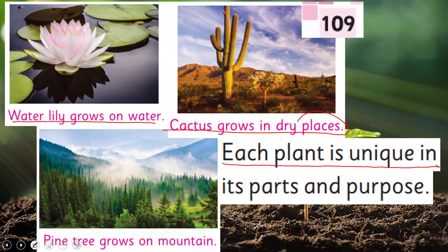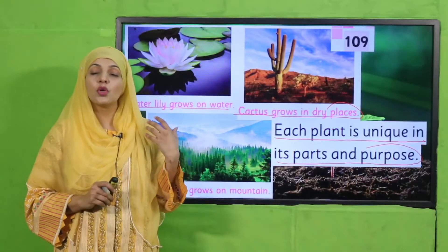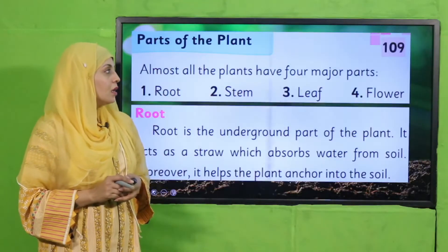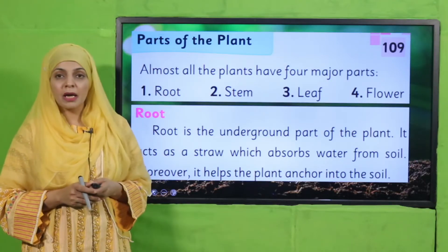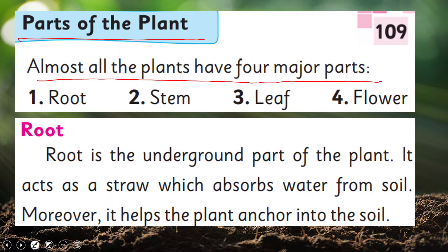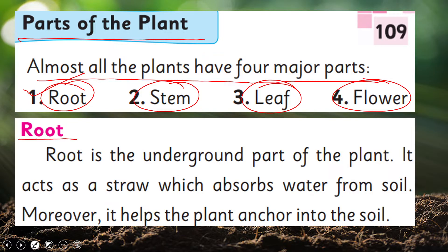Each plant is unique in its parts and purpose. All the plants are different and have mukhtilif purposes. Parts of plant — almost all plants have four major parts: root, stem, leaf, and flower. We are going to discuss about root.